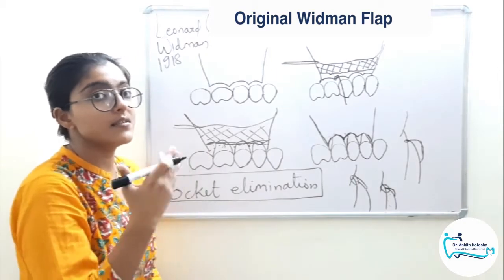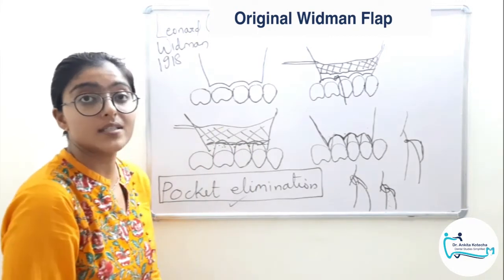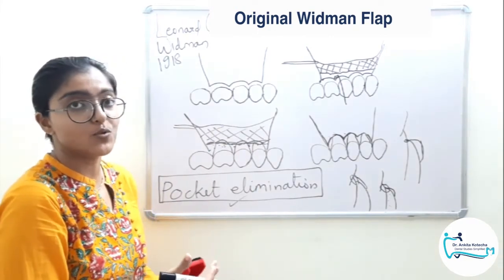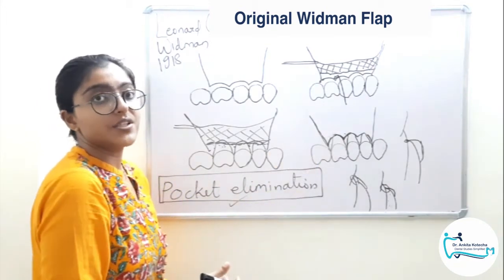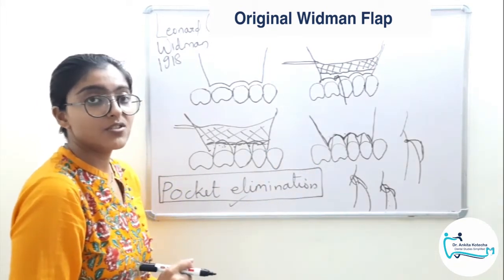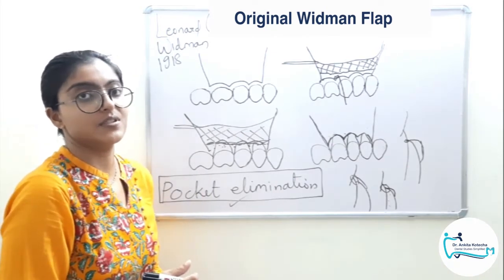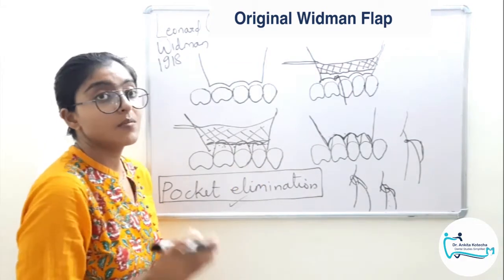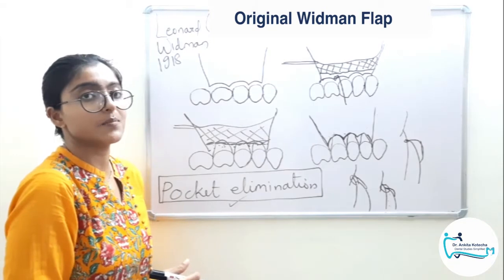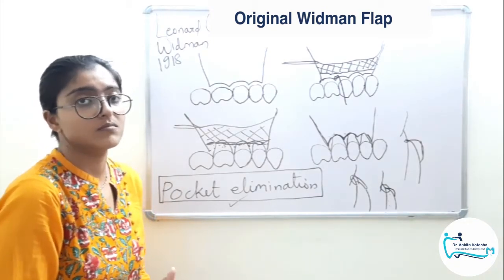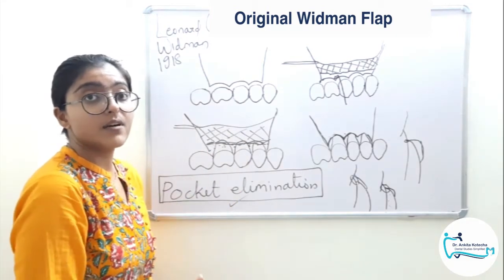Now coming to the advantages and disadvantages of this technique. The first advantage is definitely pocket elimination, which is our target when we do a flap technique. The second advantage is that flap closure is achieved, so healing by primary intention — and hence on the patient's side, less pain and discomfort. The third advantage is that, because of the apical shift of the flap margin, we may expect a certain increase in the width of attached gingiva — though this is possible, not always guaranteed.